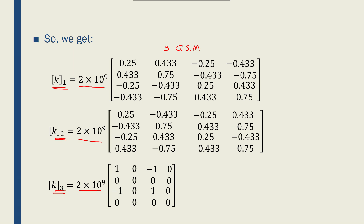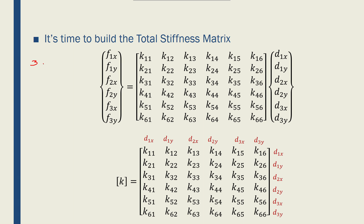Now we have to use these three global stiffness matrices to make the total stiffness matrix of our truss. We have three nodes in our truss, and each node has two degrees of freedom, so we'll end up with a 6×6 matrix. By typical representation the components are k11, k21, k31, and so on up to k66. I have put d1x, d1y, d2x, d2y, d3x, d3y notations on top of the columns and on the rows to make it easy to explain how to assemble the total stiffness matrix from the three element global stiffness matrices.